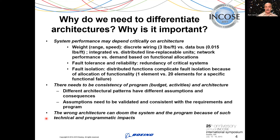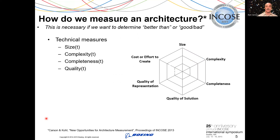Different architectural patterns have different assumptions and consequences, and we have to make sure the program is consistent with the implications of those patterns. Ultimately, if we have the wrong architecture or it's inconsistent with the program, then we may doom our project — either for technical reasons because the architecture doesn't work, or programmatically because we have such a mismatch between the demands of the architecture and the planned program that we can't realize project success given constraints like budget and schedule.